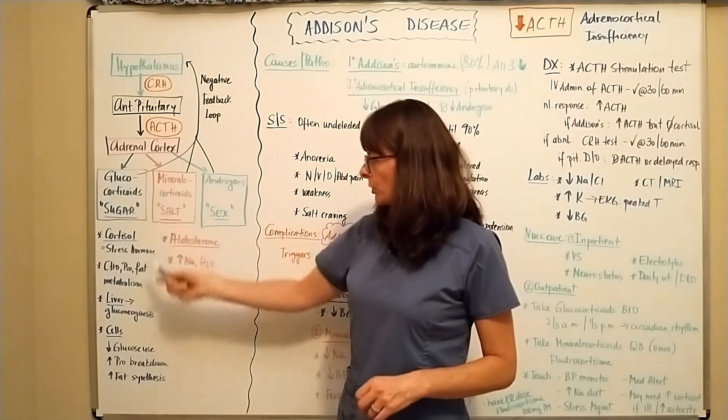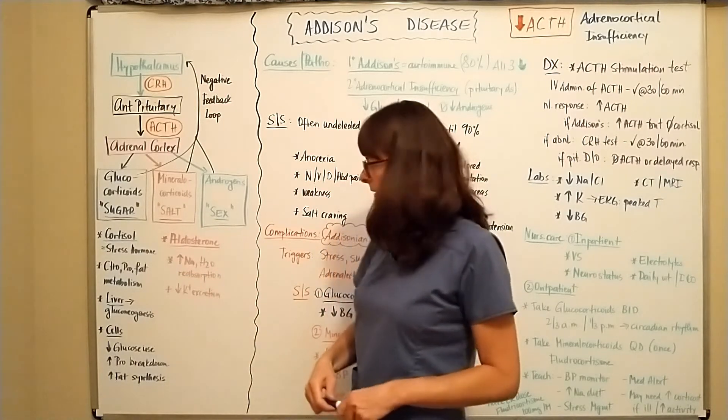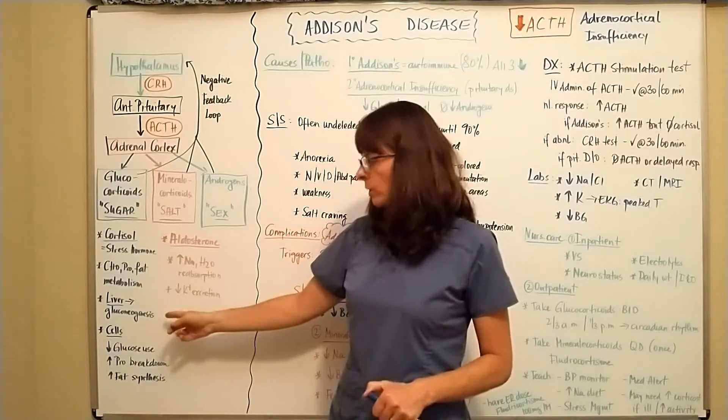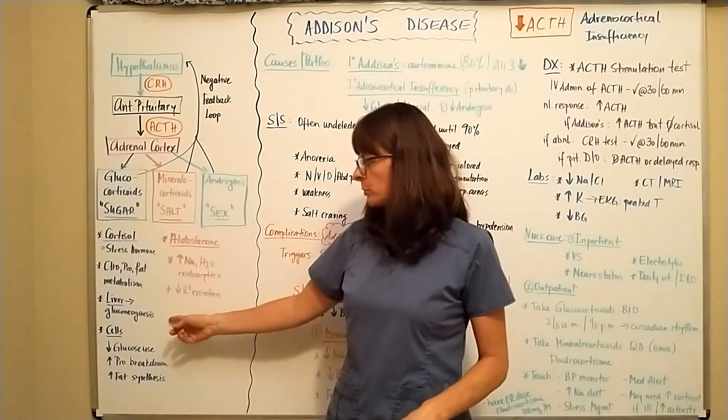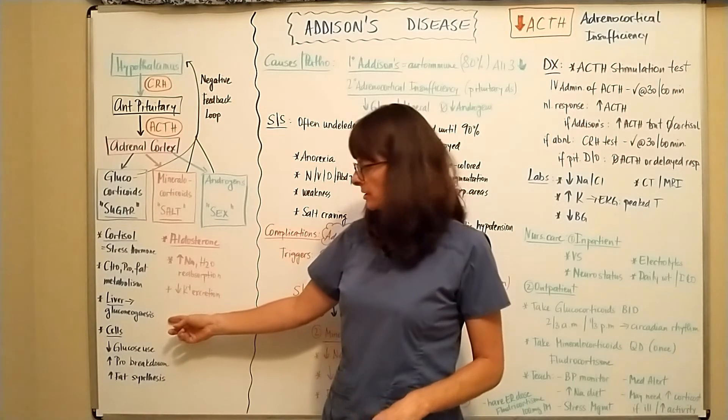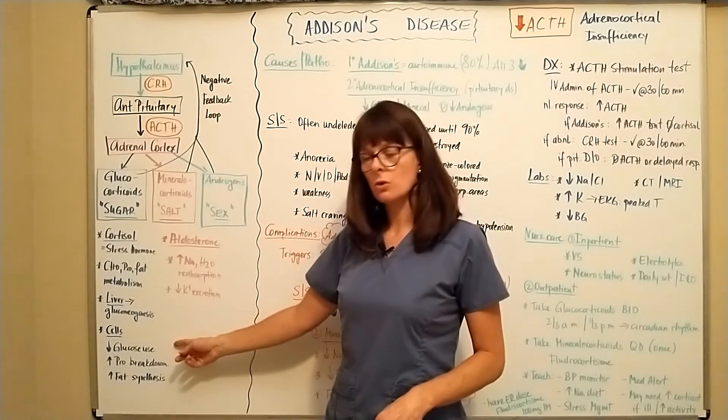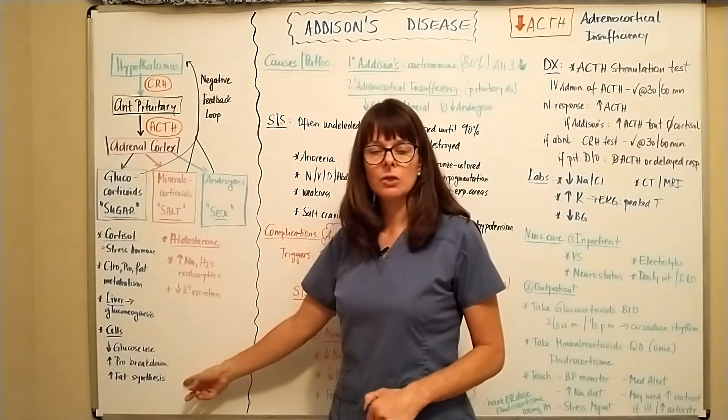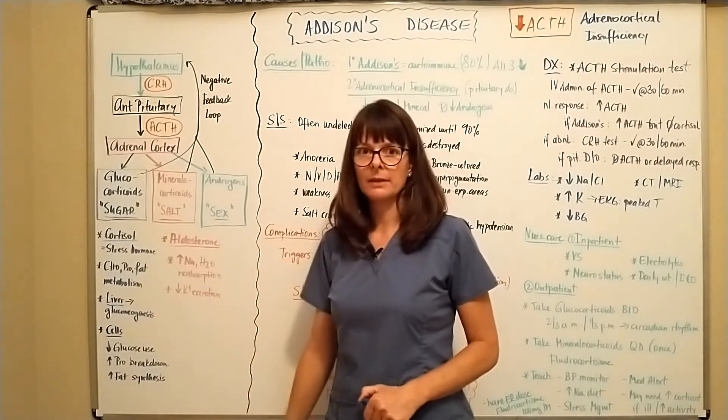Now glucocorticoids also help with carbohydrate, protein, and fat metabolism. And when we are under stress, we're going to need increased sugar, which then stimulates the liver to produce more blood glucose by the process of gluconeogenesis. And also the cells use decreased glucose, which then leads to increased protein breakdown and increased fat synthesis to keep everything in balance.